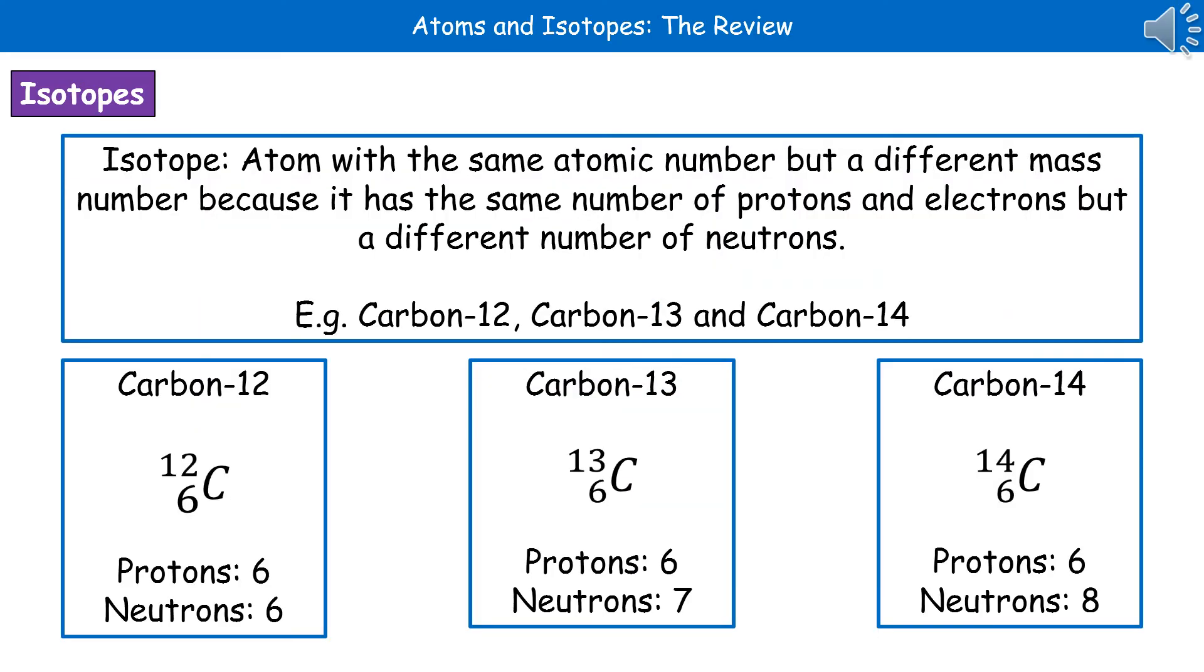The next thing we need to do is understand what we mean by the word isotope. So an isotope is an atom with the same atomic number but a different mass number. And the reason for this is that it's got the same number of protons and electrons but a different number of neutrons.